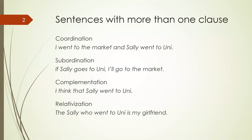Before we talk about relative clauses in particular, let's look at different kinds of sentences that have more than one clause. Coordination is where you have two sentences next to each other, neither dependent on the other: 'I went to the market and Sally went to university.' Subordination is where one sentence relies on the other: 'If Sally goes to the uni, I'll go to the market.' 'Sally goes to the uni' is the subordinate clause; 'I'll go to the market' is the main clause.